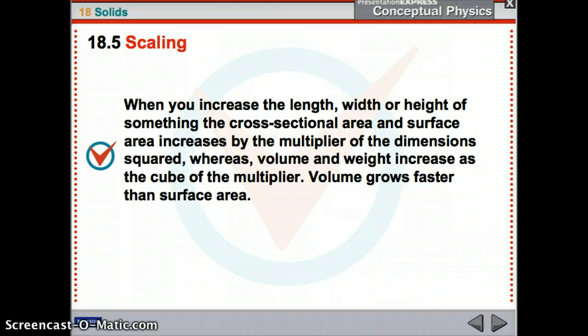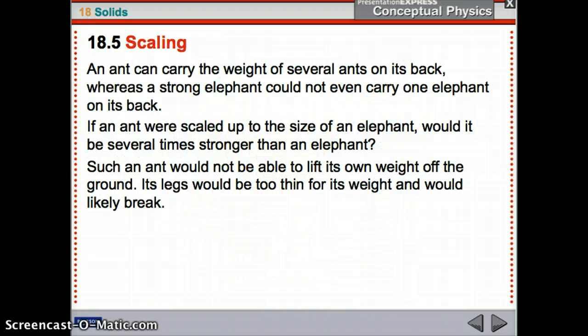What scaling is, is when you increase your length, width, or height. Those are your linear dimensions. The cross-sectional area - you cut it straight through and look at the area of a slice of it - and the surface area, the area covering the surface of the object, increases by the multiplier of the dimensions squared. So if I multiplied the length, width, and height by 2, my cross-sectional area and surface area increases by 2 squared. Whereas, volume and weight increase as the cube of the multiplier. So it would increase by 2 cubed. Volume, therefore, grows faster than surface area. Because it goes up by the cube and not the square. So volume will get bigger faster.